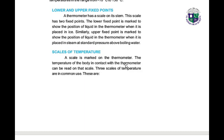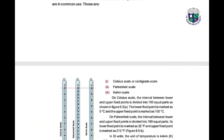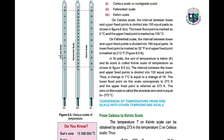A scale is marked on the thermometer, and the temperature of a body in contact with the thermometer can be read on that scale. We have the Celsius scale, Fahrenheit scale, and Kelvin scale. On the Celsius scale, the interval between lower and upper fixed points is divided into 100 equal parts; its lower fixed point is marked as 0°C and the upper fixed point as 100°C. On the Fahrenheit scale, the interval is divided into 180 equal parts; its lower fixed point is 32°F and the upper fixed point is 212°F.